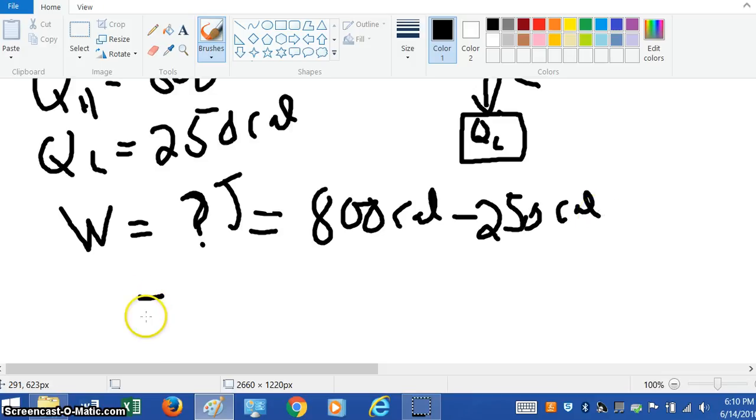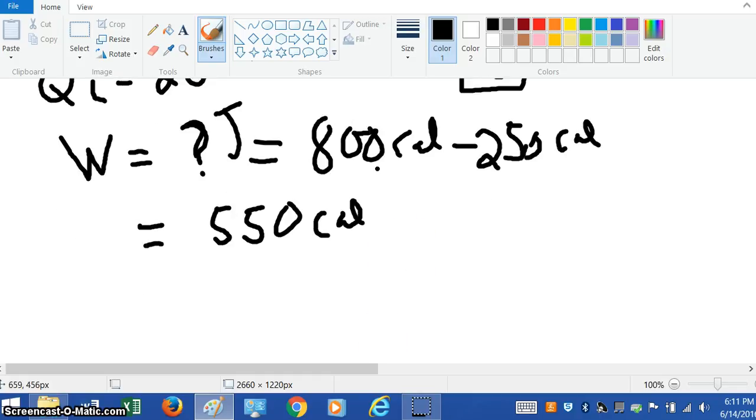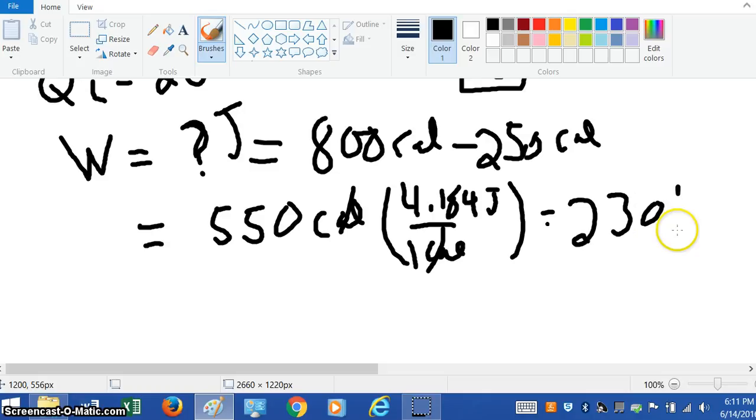And so that gives us an answer in calories. It's 550 calories. So that's the amount of work. It is a form of energy, of course. We're changing energy levels. So you get 550 calories out of that. And then let's use our mechanical equivalent of heat. We know that one calorie is 4.184 joules. And the answer is, when you multiply those two things, 2,301.2 joules.